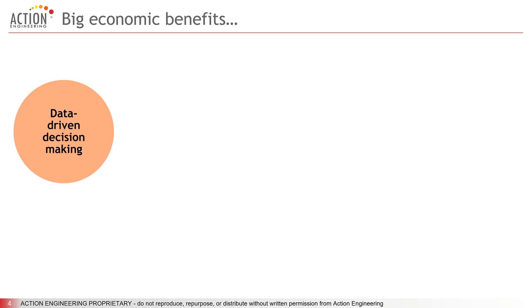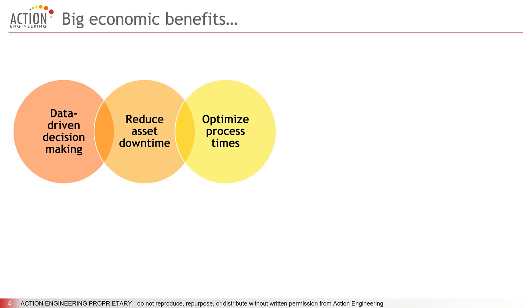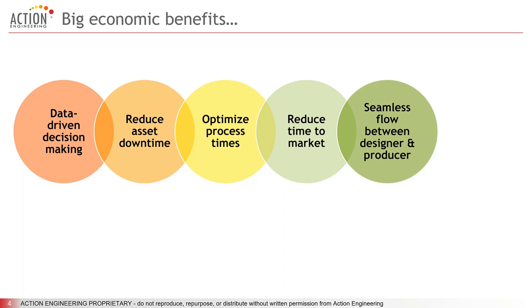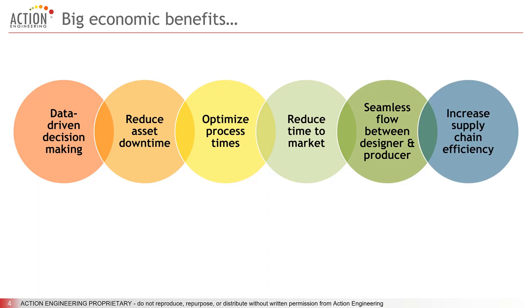Stepping back and looking at why the digital twin is important, these are a few of my favorite benefits. It helps enable data-driven decision making. It provides data that can reduce factory asset downtime. Its enabling technologies optimize process times. It, combined with new business practices, contributes to reduced time to market. It is a strand in the digital thread that facilitates seamless flow of information between designer and producer, ultimately better empowering your supply chain to be successful — and that increases your bottom line because your supply chain is more efficient.